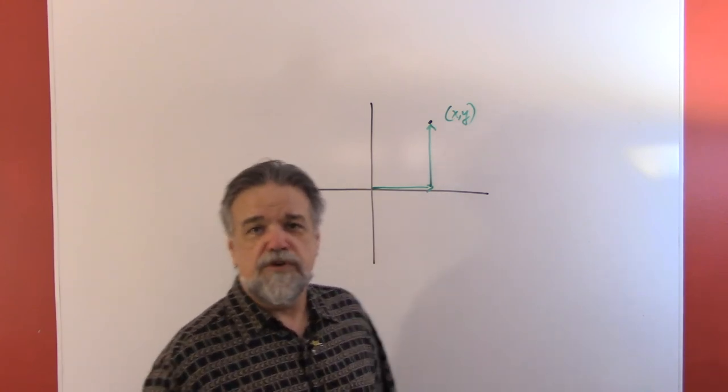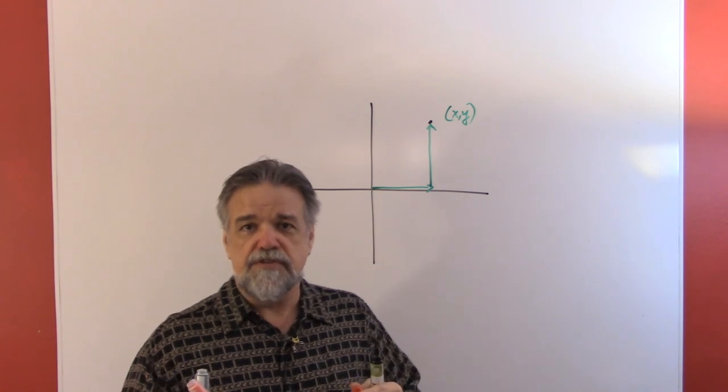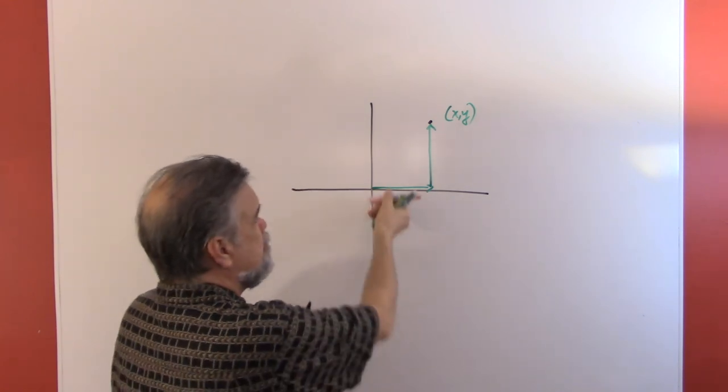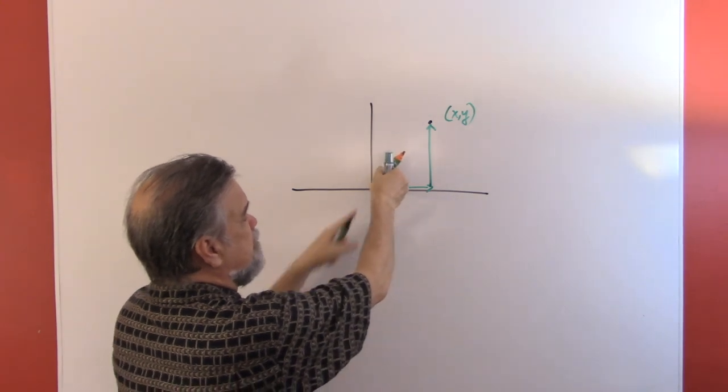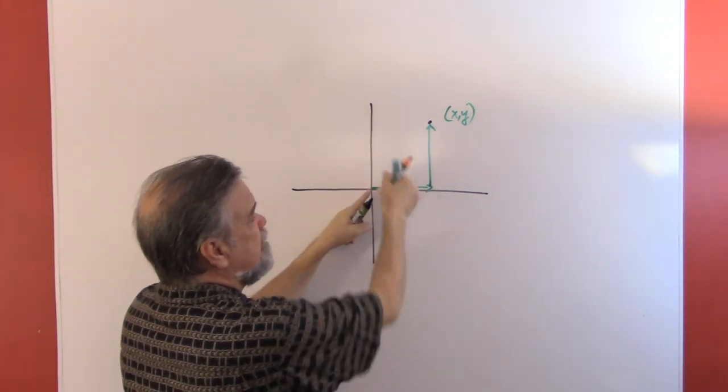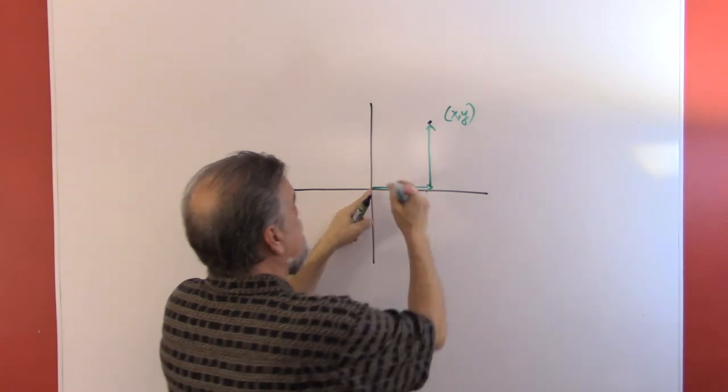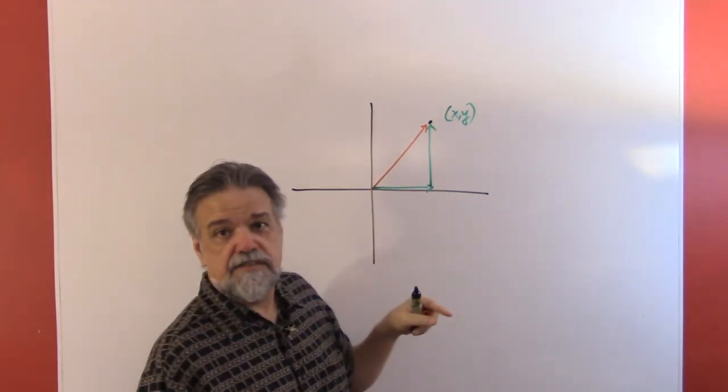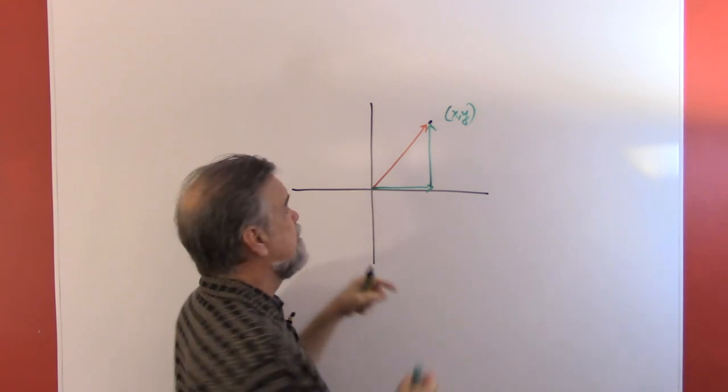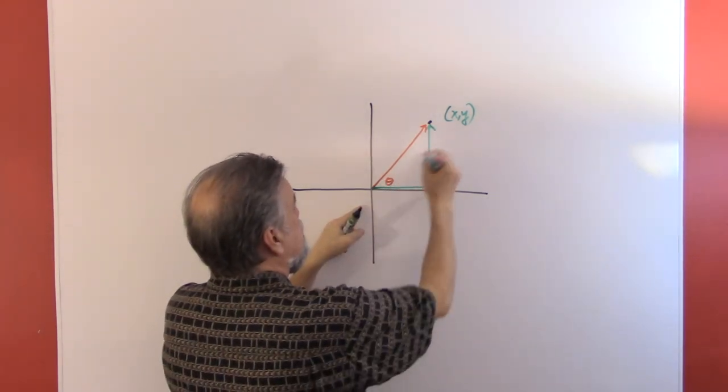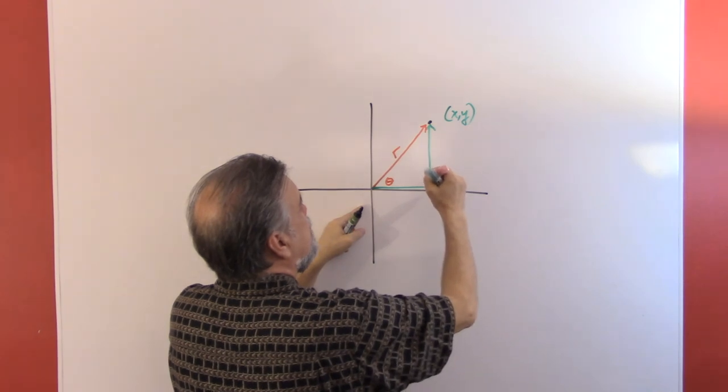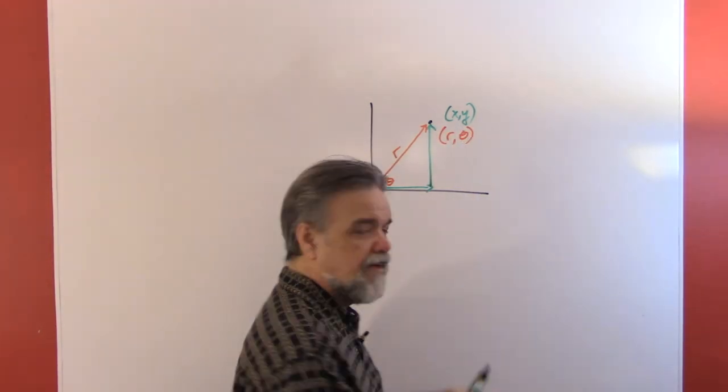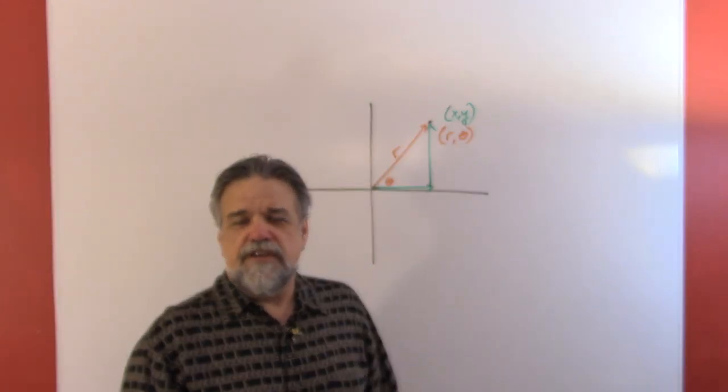With polar coordinates, as we recently learned, what you do is you also have two numbers, r and theta. You figure out which direction you're pointing from the origin to your point—that's theta—and then r is the distance that you go. So this is theta and this is r here, and you get the point (r, theta).